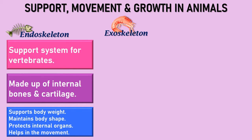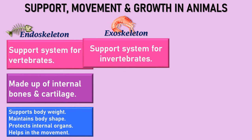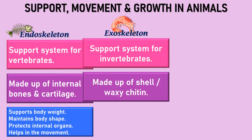An exoskeleton is an external skeleton that supports and protects most invertebrates such as prawns, crabs, spiders, scorpions, and insects. The skeleton is non-living and consists of a cuticle strengthened by chitin, a substance secreted by the epidermis. It acts as a hard outer covering, which we often call large exoskeletons as shells.